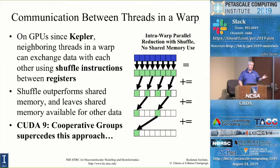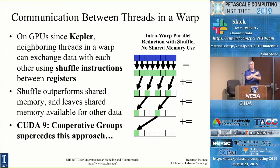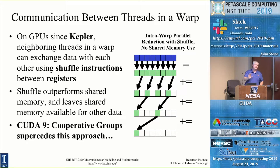Beginning with the GPUs in Blue Waters and going forward, we have a nice new instruction called shuffle. Shuffle basically allows us to do parallel reductions in machine registers without actually writing anything to shared memory, which saves shared memory for other things. Within the 32 threads that are members of the same warp, they can actually read and write each other's registers directly using this special operation. The shuffle is faster because it operates on registers, whereas shared memory is maybe one-sixth to one-eighth the speed of a register. And because you're leaving shared memory alone, it's free and available for other uses.